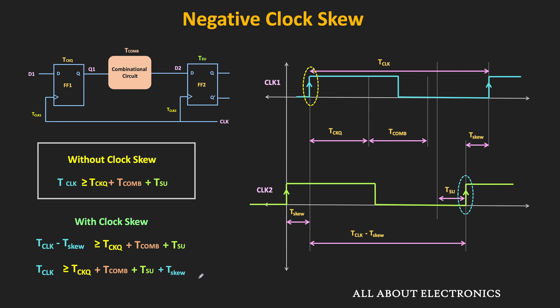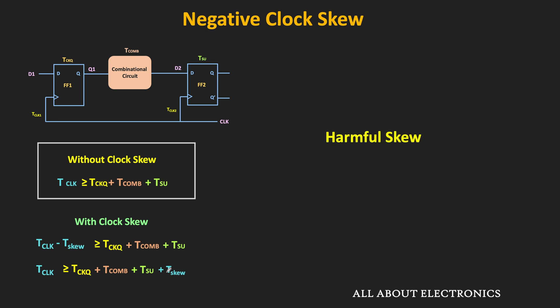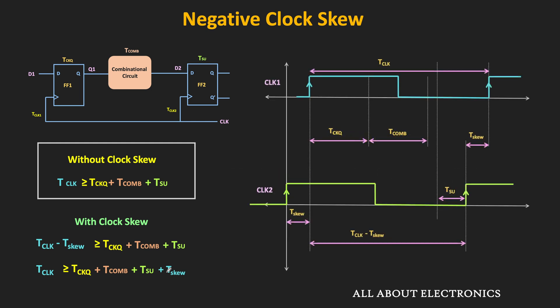Because of negative clock skew, the minimum required clock duration increases, meaning the operating frequency of the circuit will reduce. This is why negative clock skew is sometimes referred to as harmful skew. However, due to negative clock skew, we won't have hold time violation. Since the second flip-flop receives the clock earlier than the first flip-flop and T-skew is negative, the condition for hold time violation becomes: Tcq plus Tcom must be greater than or equal to TH minus T-skew. With negative clock skew, the chances of hold time violation reduce. Both positive and negative skew thus have an impact on the overall performance of the circuit, and if not treated properly, we might get errors during circuit operation.